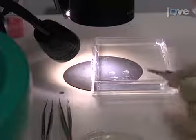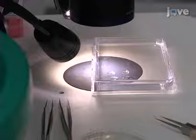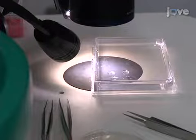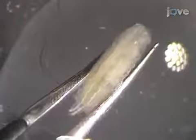Pick a wandering third instar larva from the vial wall and place it in a 50 microliter drop of ice-cold PBS on a dissection plate made of Silgard elastomer in a tissue culture dish.